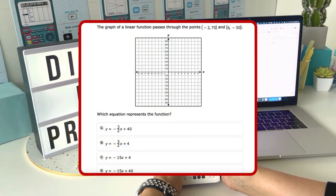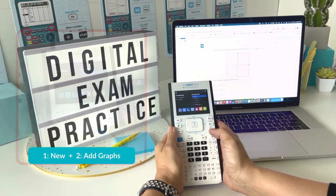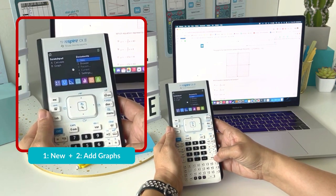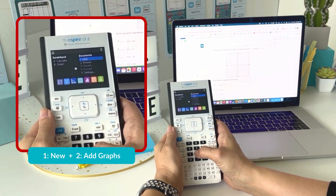This digital exam question asks us to find the equation of a line given two points. On my TI-Inspire, I'm going to create a new document and add a graphs page.